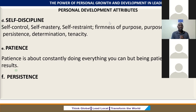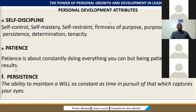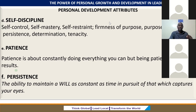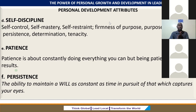Patience is critical — patience is about constantly doing everything you can, but being patient about results. And then finally, persistence — the ability to maintain our will as constant as time in pursuit of that which captures your eyes. These are very important attributes. We can start seeing the plan coming out, and the plan also needs to take care of these attributes. If I realize I'm having a challenge on consistency, I need to flag it out so that I give it more attention and build myself around that area.